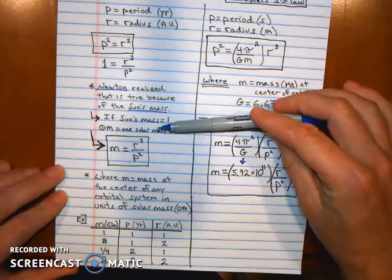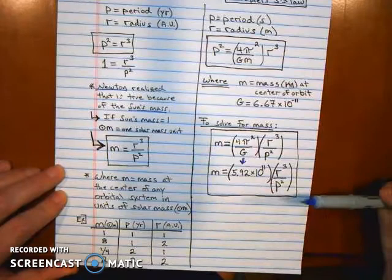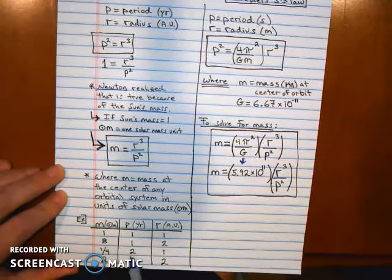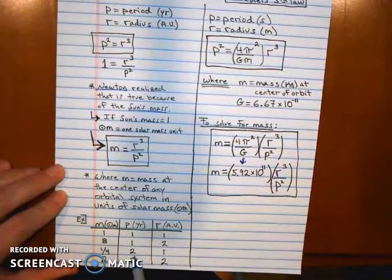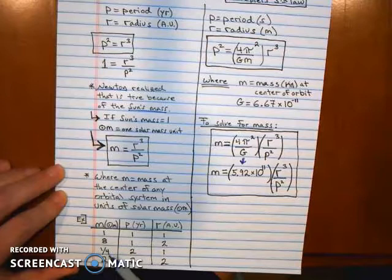So you can see we can use this simplified version to explore the masses of stars that have planetary systems that we can observe. If you observe a planet whose period is two years, but it's only one AU from the sun, so the same distance from the sun as Earth, but it's moving much slower...